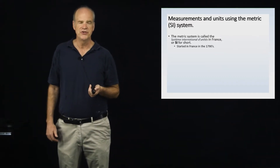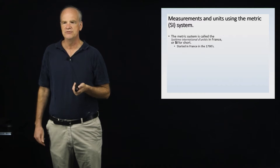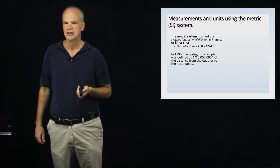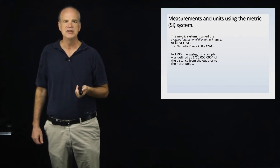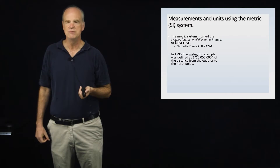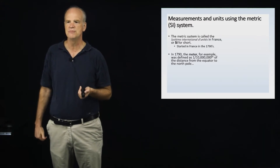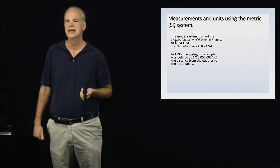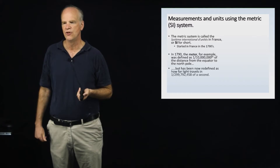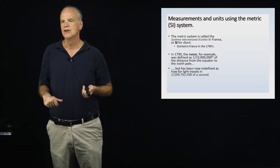What the metric system in France is called is the Système International des Unités, and we just call it the SI system for short. Back in 1790, they decided to define a meter as a base unit of length, specifically as exactly one ten-millionth of the distance from the equator to the North Pole.